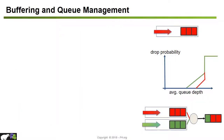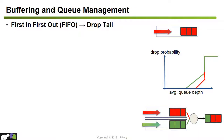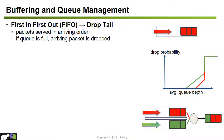Another job of the data plane is managing its buffers and queues. When multiple packets arrive to be forwarded to one port and the aggregated arrival rate is higher than the port's serving capacity, queues build up. The most simple way to treat packets is to serve them in arriving order — first in first out — which is called a FIFO queue or drop tail, because if the queue is full any arriving packet is dropped.